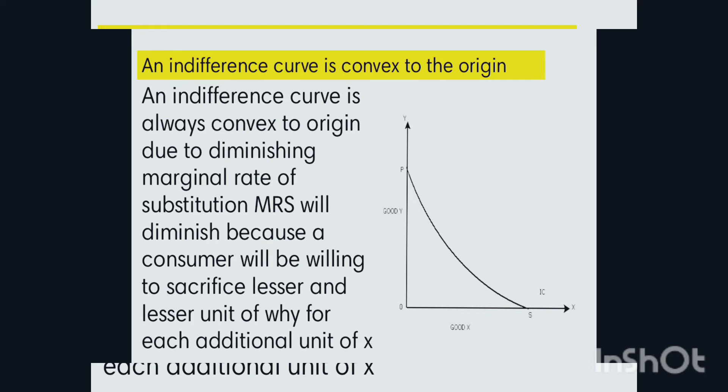An indifference curve is convex to the origin. It is convex to the origin due to the law of diminishing marginal rate of substitution. The marginal rate of substitution diminishes because the consumer will be willing to sacrifice lesser and lesser units of Y for each additional unit of X. So the curve is always convex to the origin.